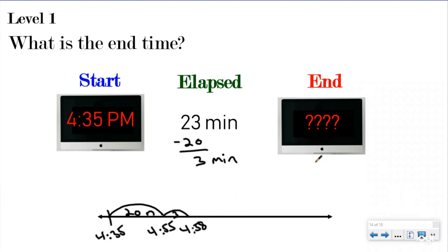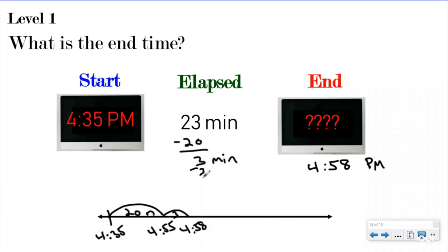So my end time is 4:58 p.m. That's how we use our timeline with our hills. We're not doing mountains yet - we'll get there. Using hills and keeping track of your elapsed time, making sure you're subtracting it as you go.